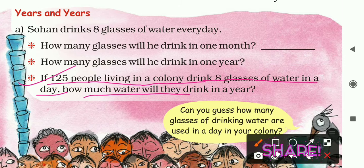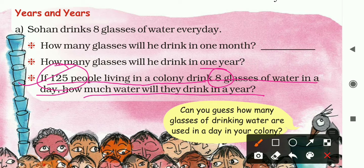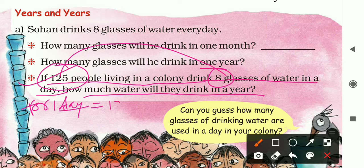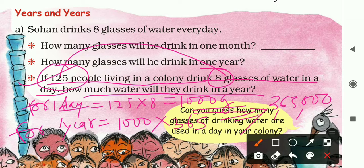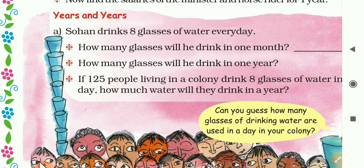Next: if 125 people living in a colony drink 8 glasses of water in a day, how much water will they drink in one year? First, find the total glasses for 125 people in one day: 125 multiplied by 8 equals 1,000 glasses. For one year, that is 1,000 multiplied by 365, giving a product of 3,65,000 glasses needed for this colony in a year.